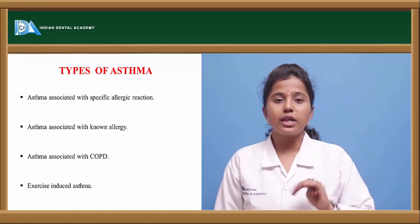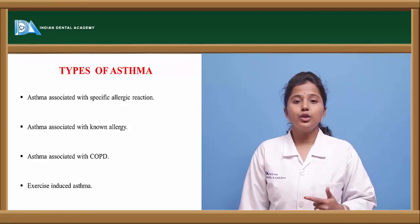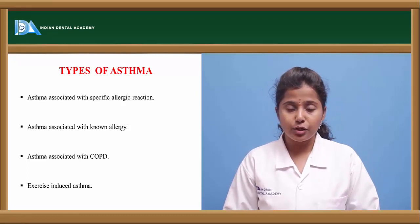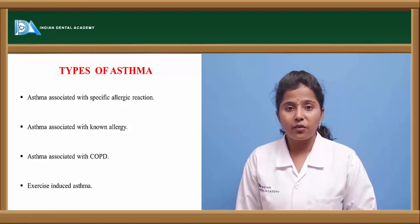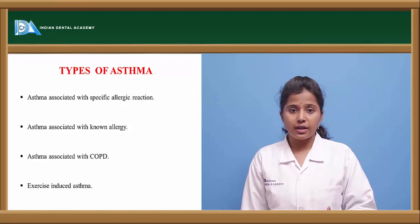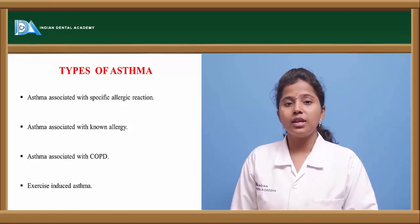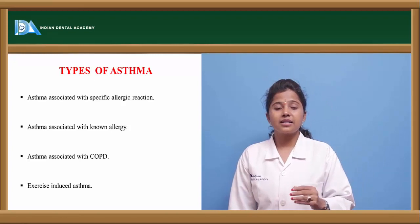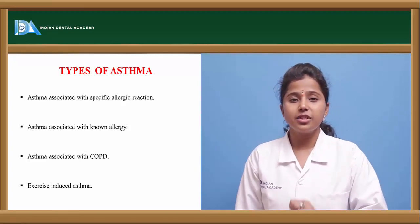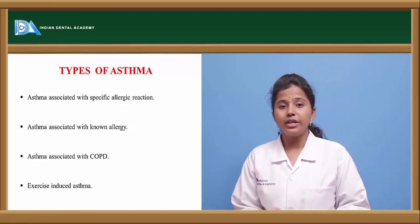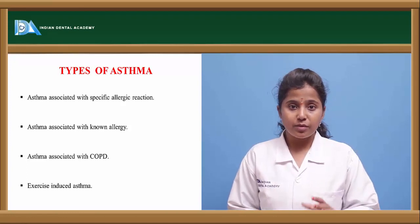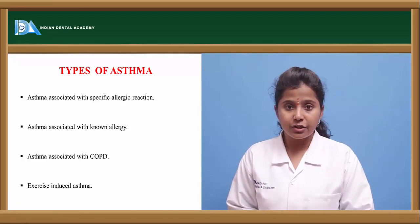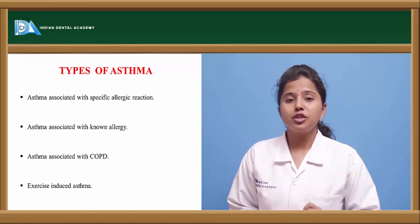Let us see the types of asthma. There are four types. The first type is asthma with a known allergic condition — if a person is suffering from asthma with a particular allergen like histamine or bradykinin, we can diagnose asthma from a known allergen. The other one is asthma caused because of specific allergic conditions — if a person already has allergic reactions in the body, there is more scope of getting asthma. Both a known allergen and a specific allergic condition can cause asthma.